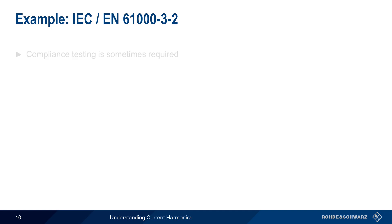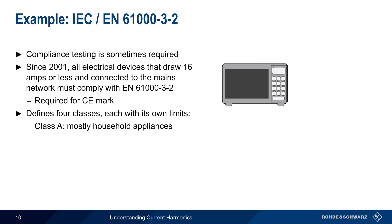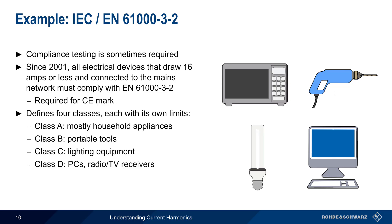The negative effects of current harmonics are serious enough that formal compliance testing is required for many devices and in many regions. For example, since 2001, all electrical devices that draw 16 amps or less, and which are connected to the mains network, must comply with the EN 61000-3-2 standard, mentioned a moment ago, in order to obtain a CE mark and be sold in the European Union. This standard defines four classes, or sets of limits, depending on the type of device under test. Class A mostly applies to household appliances. Class B is for portable tools. Class C covers different types of lighting equipment. And Class D applies to PCs, radio and television receivers, etc.